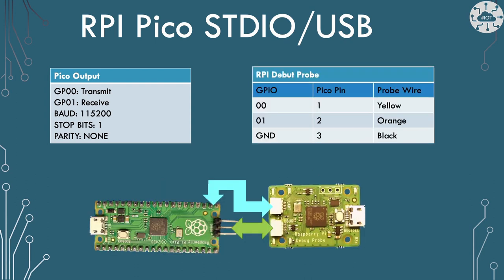You can plug this into the Raspberry Pi debug probe's UART port. The yellow cable goes to GPIO pad 0, the orange to GPIO pad 1, and the black cable to any ground — I normally use pin 3.